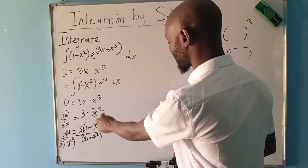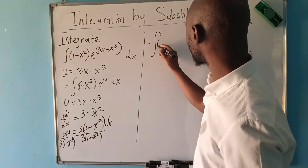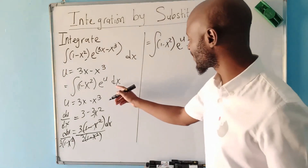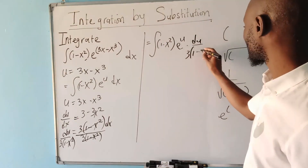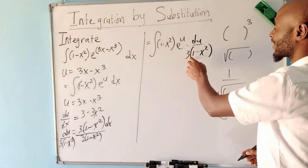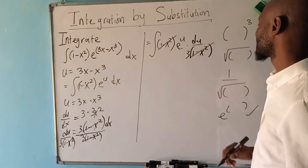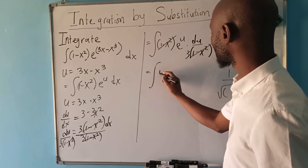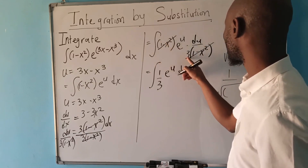Now I have the value for dx and I can replace whatever is dx with that. So what we have is the integral of (1 − x²) · e^u · du / (3(1 − x²)). The (1 − x²) terms simplify, and what we have is the integral of (1/3) e^u du.